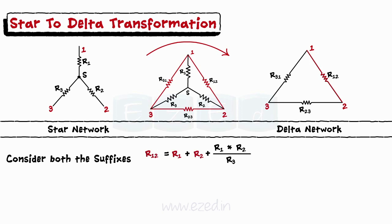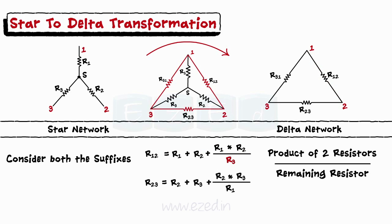Thus, R1 plus R2 and then the ratio of product of the two resistors upon the remaining resistor, thus R1 into R2 upon R3. Thus, R23 can be written as R23 equals R2 plus R3 plus R2 into R3 upon R1 and R31 equals R3 plus R1 plus R3 into R1 upon R2.